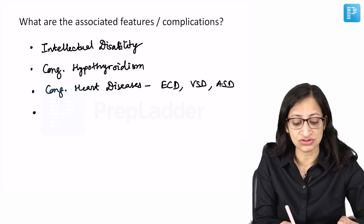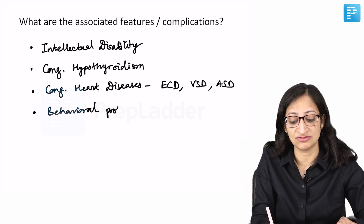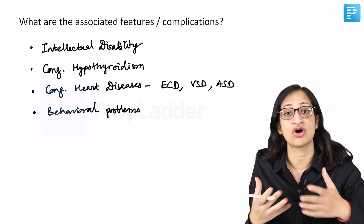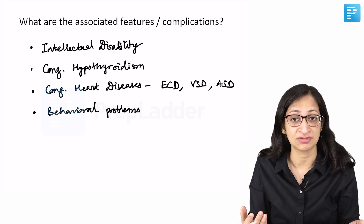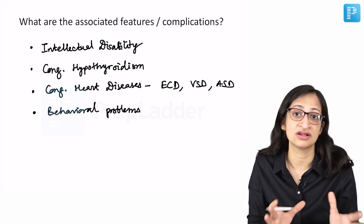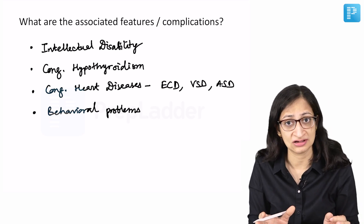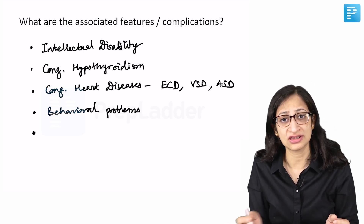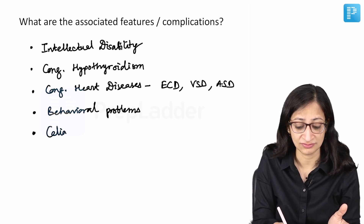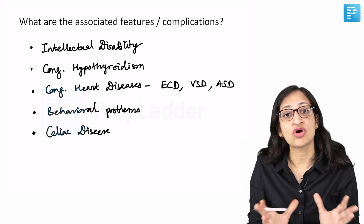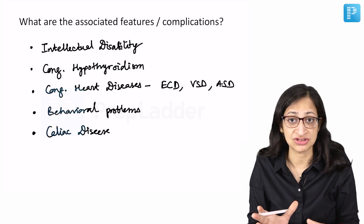There can be associated behavioral problems. Sometimes these individuals have some behavioral problems and are not really able to mingle with peers of their age. They can have irritability and behavioral issues which need to be tackled. Apart from that, there is also an increased risk of having celiac disease. These are some of the commonly associated conditions with Down syndrome for which you have to be vigilant.